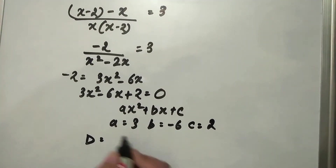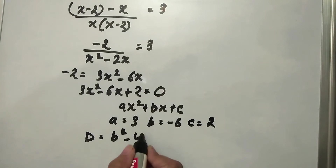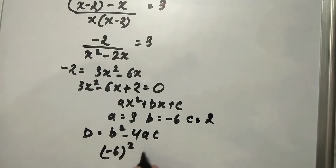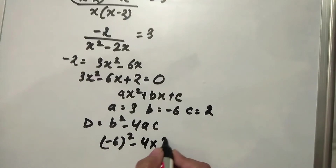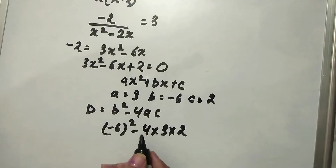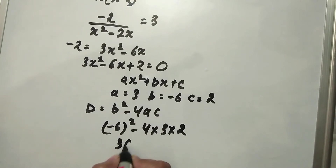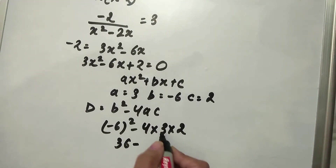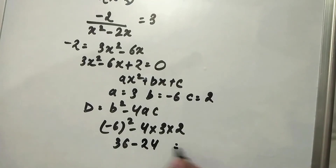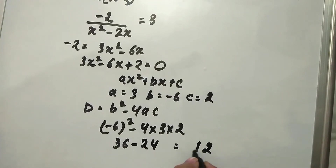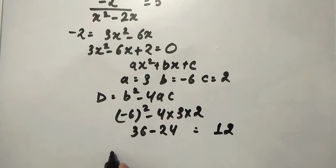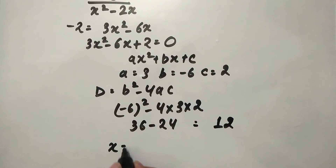The discriminant is D equals b squared minus 4ac. b is minus 6, so minus 6 whole squared minus 4 into 3 into 2. Minus 6 whole squared is 36, minus 4 times 3 is 12, and 12 into 2 is 24. So 36 minus 24 equals 12. The discriminant value is 12.